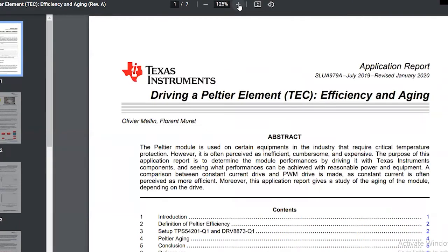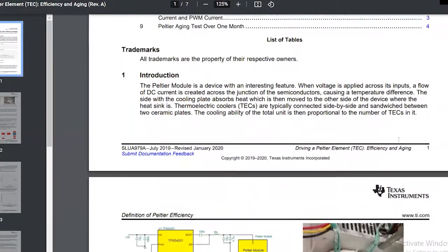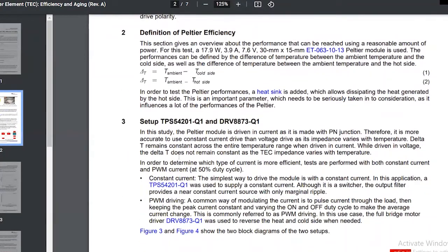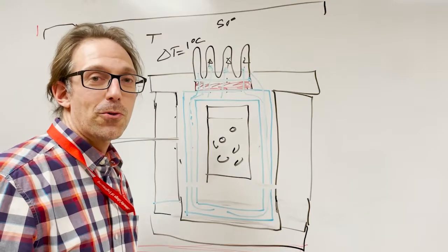There's one other aspect of running a Peltier that we didn't really consider much, and that's how do you properly drive them. Professor Desai found this application report from Texas Instruments. And there's an interesting sentence here, and it says, the Peltier model is driven in current mode as it is made with a PN junction. So it's a semiconducting device, and PN junction is basically a diode. It's more accurate to drive it with a constant current than a voltage. So in class, we were always talking about driving this with a constant voltage, where it might actually be better to drive it with a constant current. Let's go to the lab and see if it works.